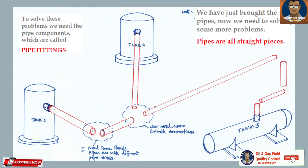To solve this problem we have brought the pipes, but pipes are all straight — so how will we connect them? We need pipe components which are called pipe fittings. You can see in the diagram that we need some bends, and the pipes are of different sizes.